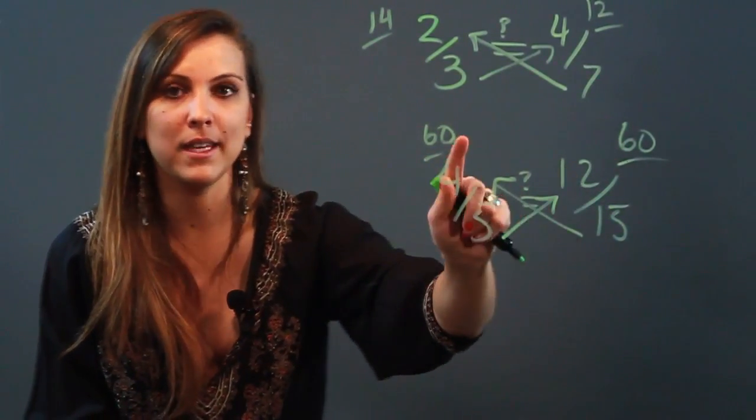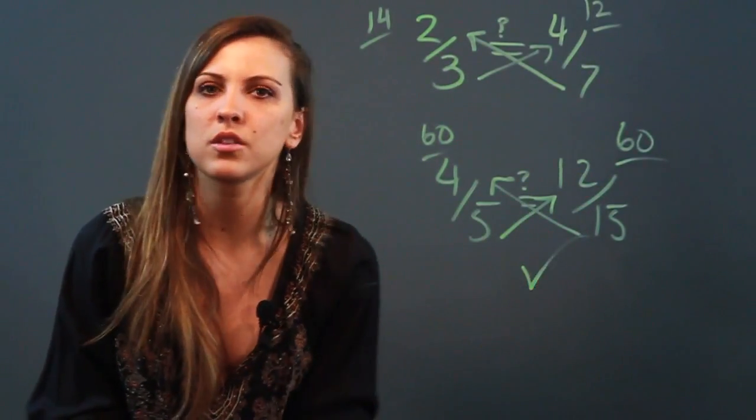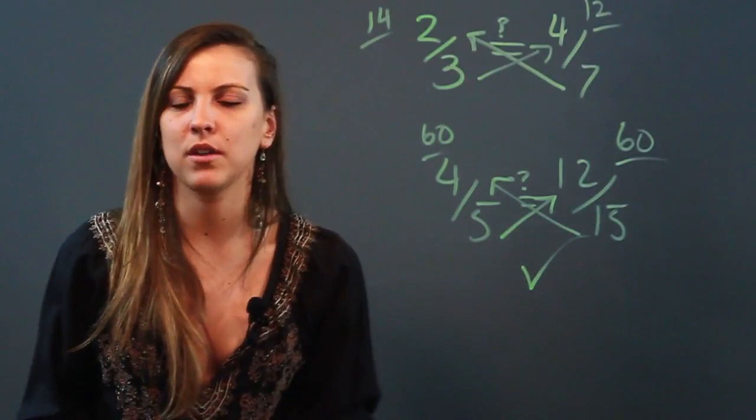So when I compare these products, I have sixty and sixty. They are equal. That means that these two ratios are also equal, and they form a proportion. And that's how to tell which pairs of ratios form a proportion.